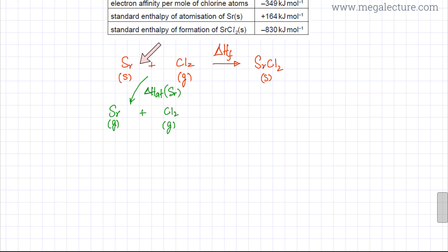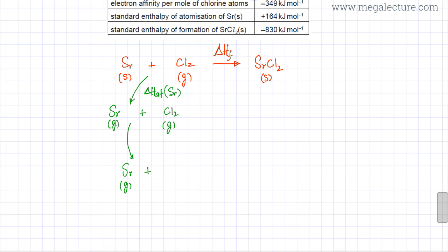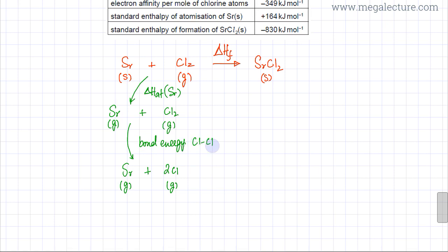In the first step, the strontium metal has all its metallic bonds broken to give strontium gaseous atoms. In the next step, keeping strontium gas as it is, we break the Cl–Cl bond to form two Cl gaseous atoms. This step is equal to the bond energy of the Cl–Cl bond.